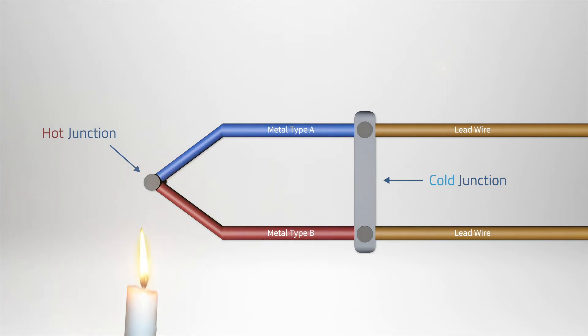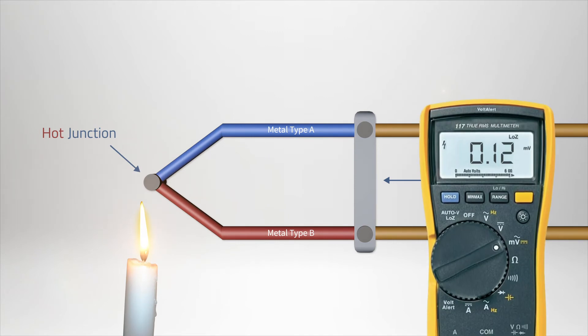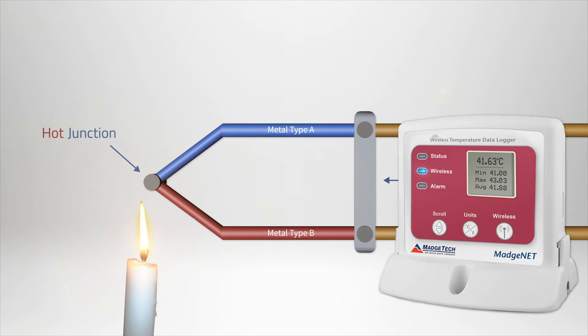By changing the temperature at the hot junction, a voltage will begin to flow through the circuit which can be measured. Based on the differential in temperatures between the hot and cold junctions, a formula can be created that converts the voltage to a temperature reading.